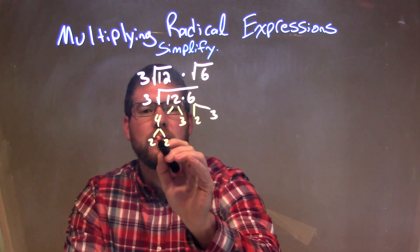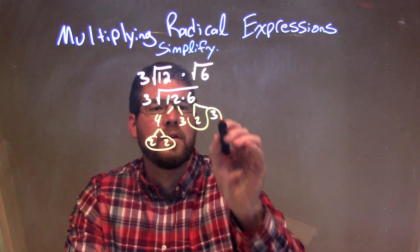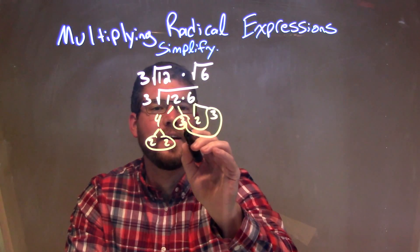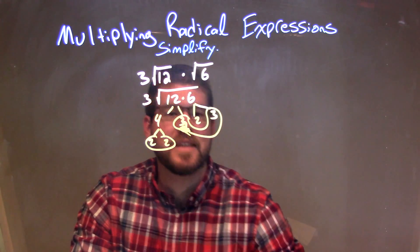So now we can circle a pair. We have a pair of 2s here, and a pair of 3s here.